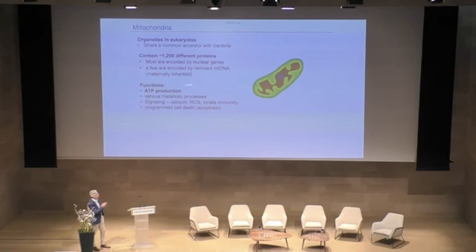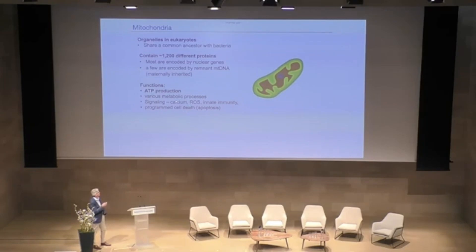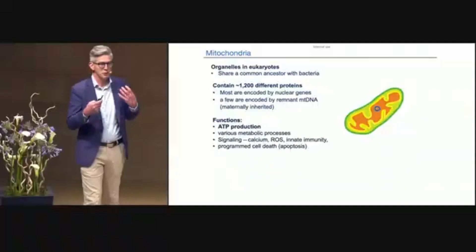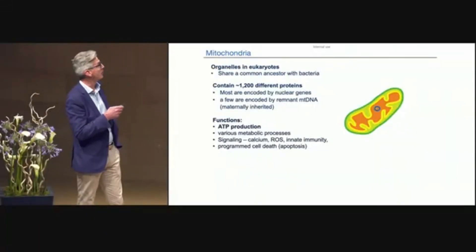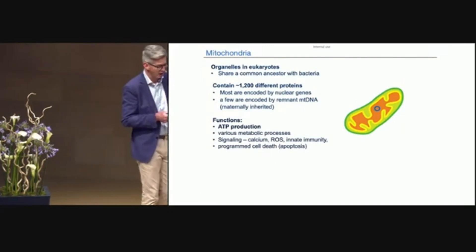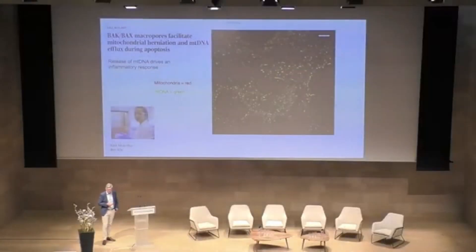The main function of mitochondria is the production of ATP, the universal currency of energy, but they're involved in many other processes — heat production, signaling, calcium signaling, the generation of reactive oxygen species, and they serve as platforms in innate immune processes. They're also involved in programmed cell death: when cells get old and need to be turned over, a silent form of cell death called apoptosis enables that cell to die in an immunologically silent manner.